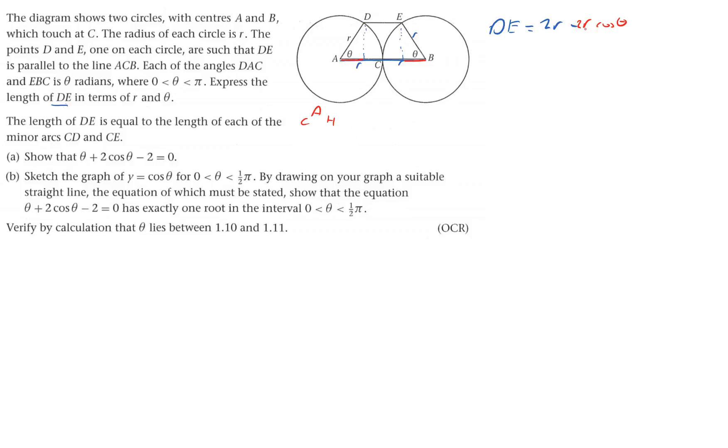That's the first bit. For the second bit, it says the length of DE is equal to the length of each of the minor arcs CD and CE. They're both r theta, and so that says that 2r minus 2r cos theta must equal r theta. That's pretty much done.